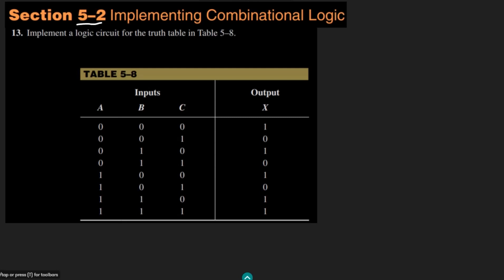Welcome back, this is section 5.2 and today I am going to talk about question 13. The logical circuit has been given in the form of table 5.8, which is basically the truth table. The statement says: implement a logic circuit for the truth table in table 5.8, which has different inputs and a single output. So let me solve it.